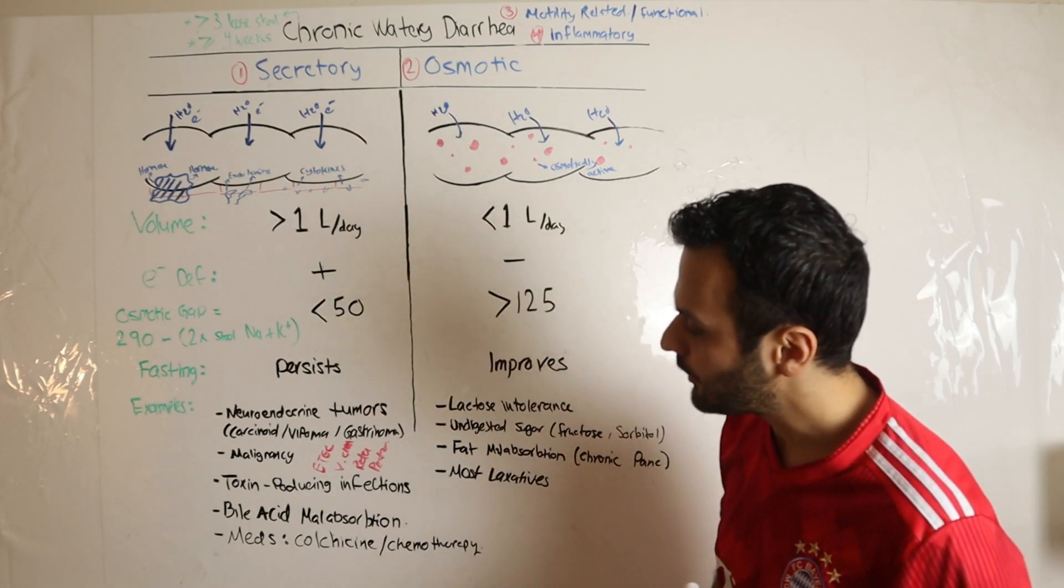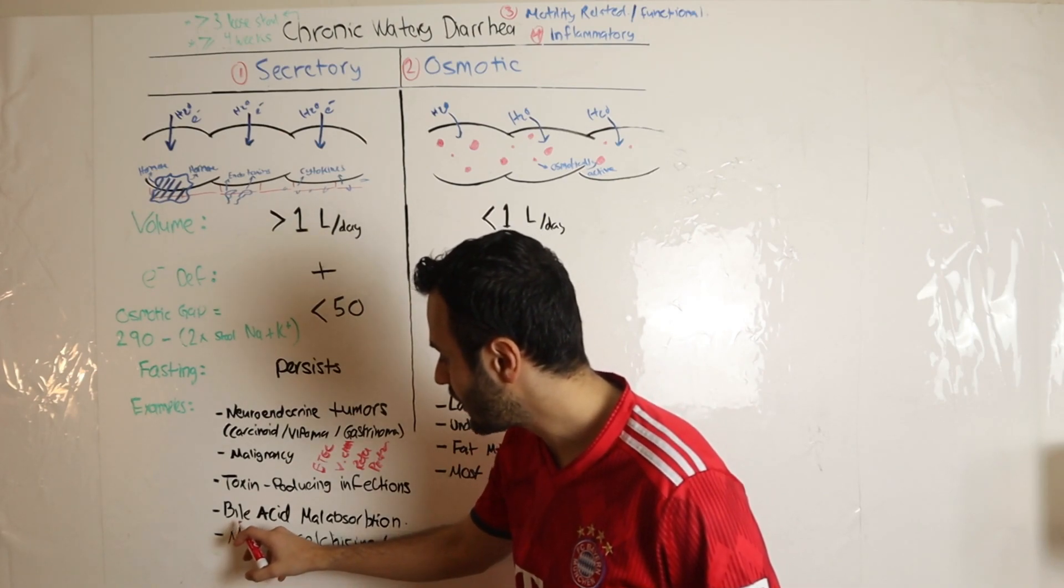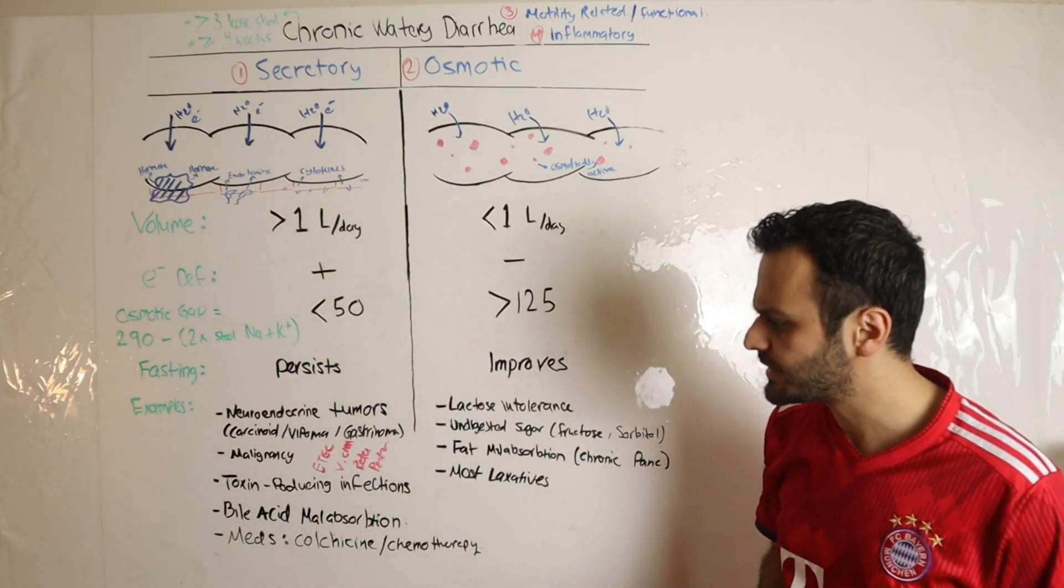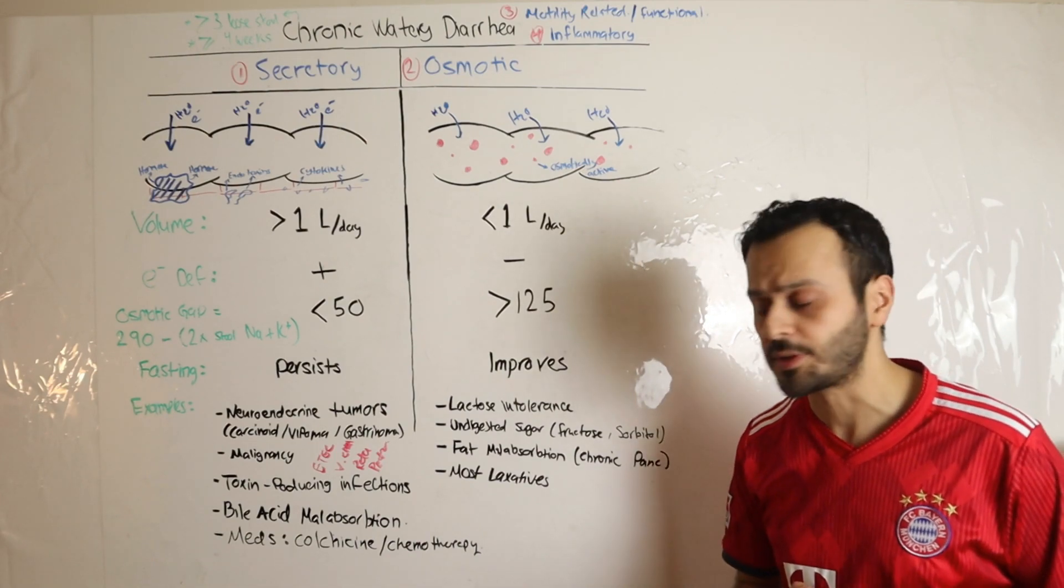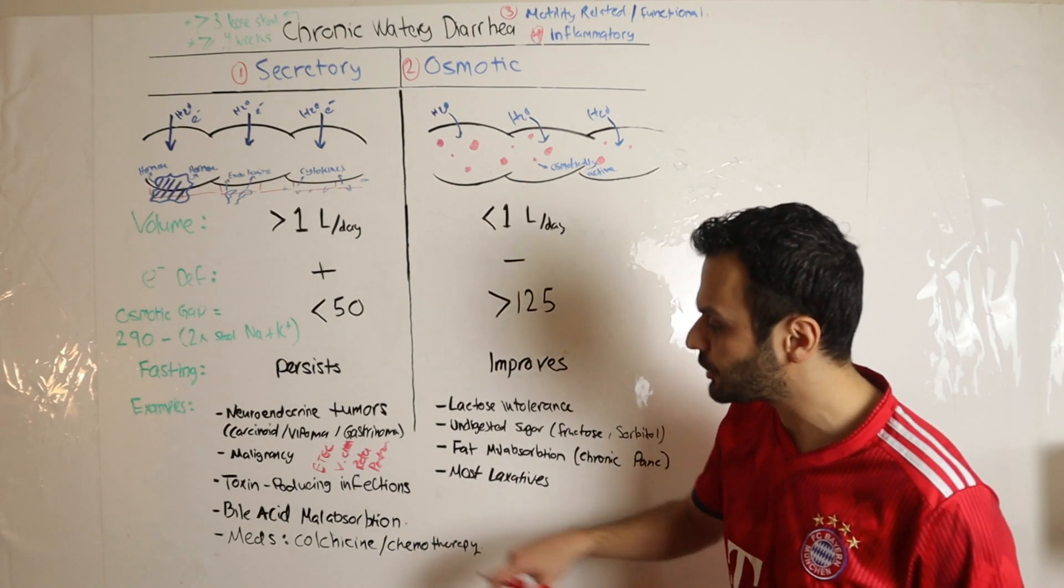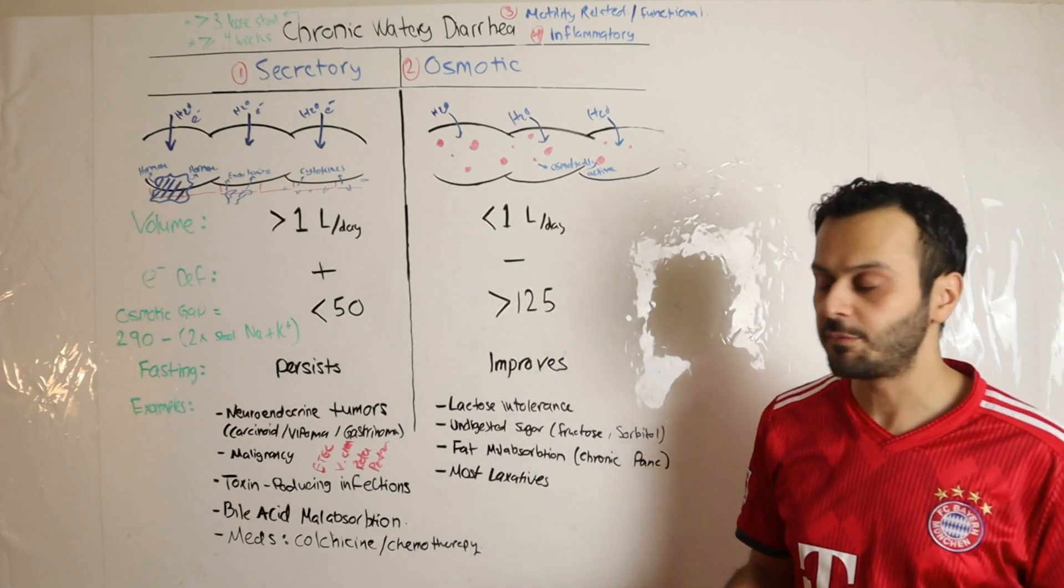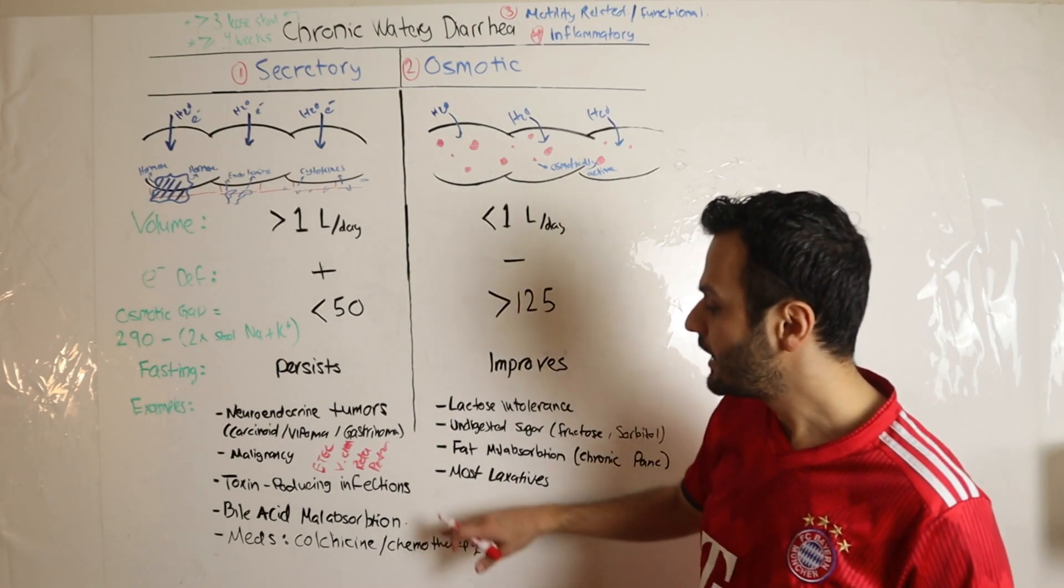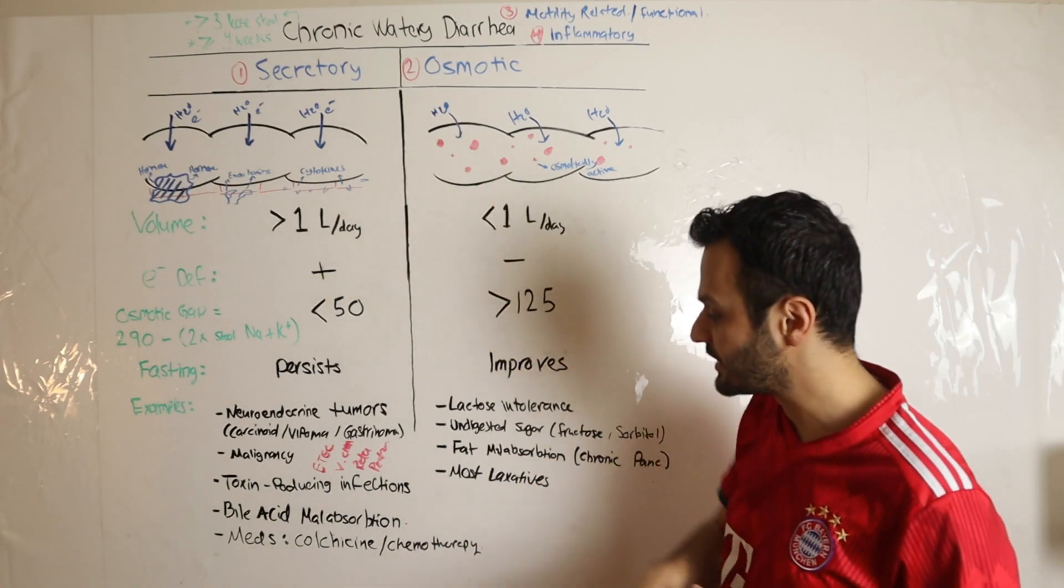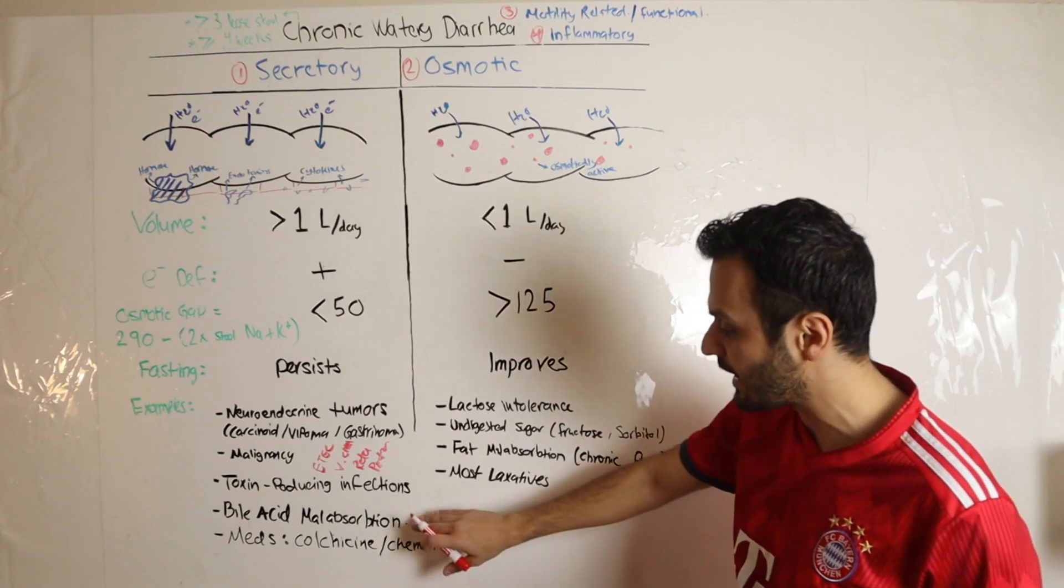Other examples of secretory diarrhea include bile acid malabsorption. These patients usually just had a bowel resection, and due to this surgery they have an accumulation of bile acids in their GI tract. This bile acid causes a heavy inflammatory state and thus secretory diarrhea. This is actually heavily missed in clinical practice.